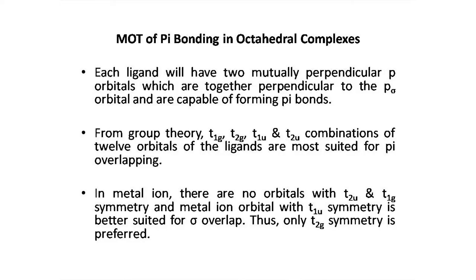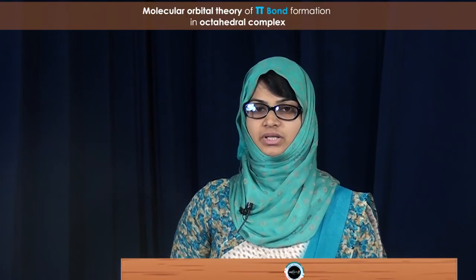We can consider two cases. In one case, these p pi orbitals can be vacant p pi orbitals, and in the other case they are filled — p pi filled orbitals. The vacant orbitals are usually given by ligands such as cyanide (CN⁻), and an example of filled p pi orbitals is chloride (Cl⁻). These differences between the two types of ligands in the formation of pi bonding can also be studied using molecular orbital theory.